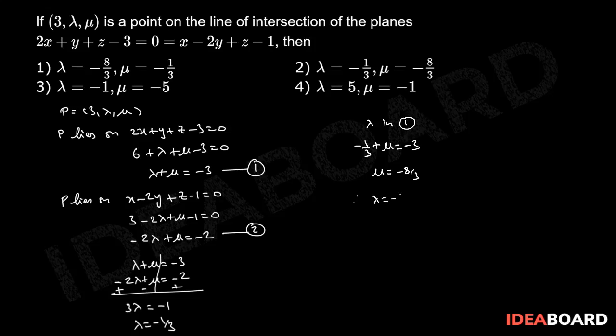Therefore, lambda = -1/3 and mu = -8/3. Therefore, option 2 is the correct option.